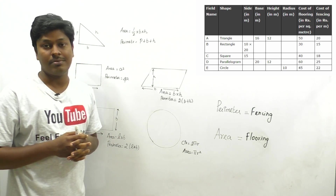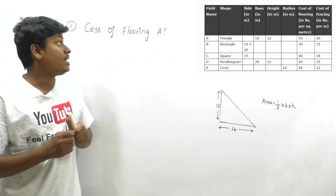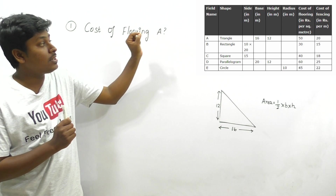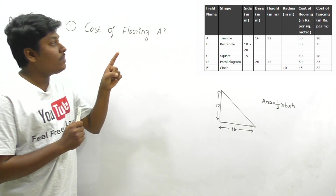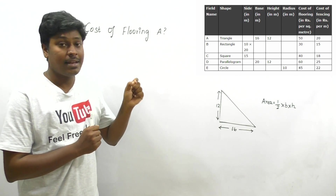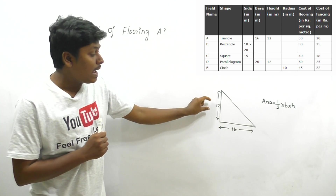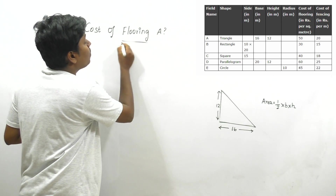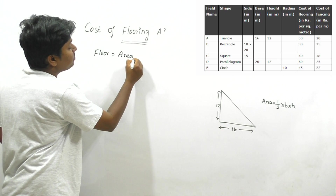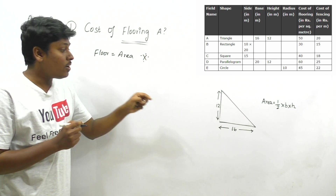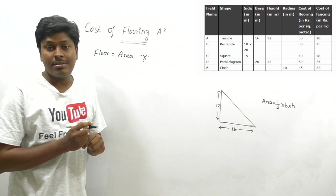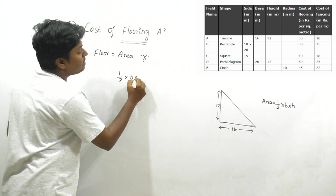Now let me move to the first question: what is the cost of flooring for field A? Field A is in the form of a triangle with base = 16 and height = 12. Cost of flooring equals area. To find the area of the triangle, we use the formula: area = ½ × base × height.